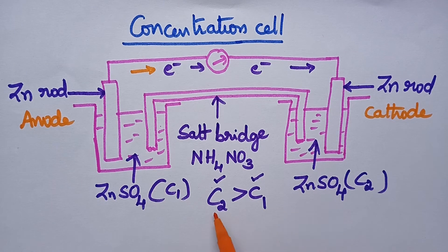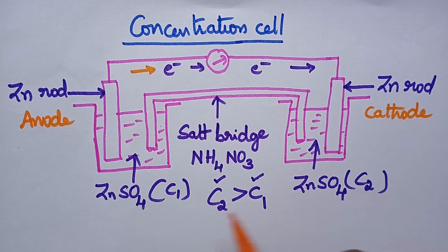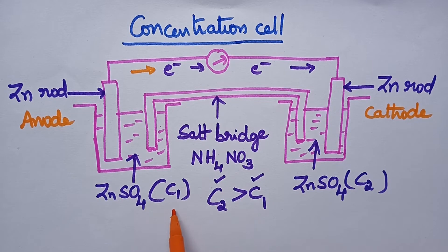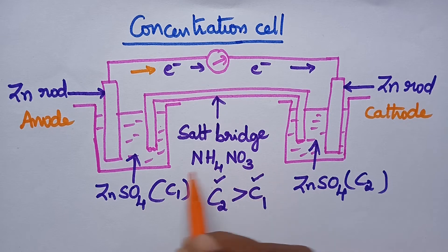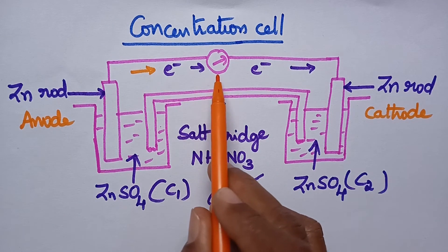C2 is greater than C1, and hence material will be transferred from C2 to C1 — that is, from the higher concentrated solution to the lower concentration solution. With the result, that potential difference will appear as electricity in the voltmeter.